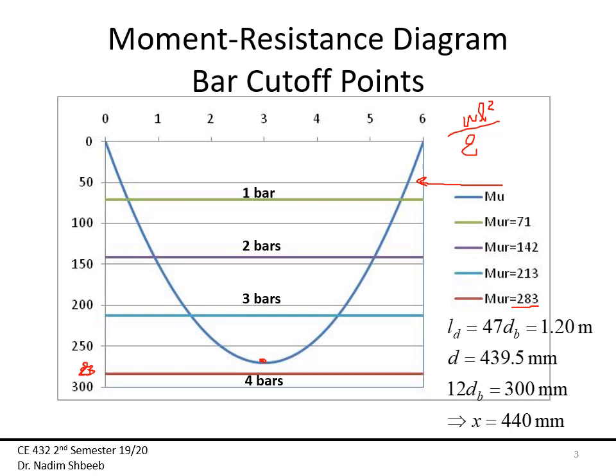One important code provision: at least one-third of bars must run continuously into the supports. With four bars, one-third is 1.3 bars, so two bars must remain uncut into the supports. I'll still show how to handle cut-offs. The points of inflection are where three bars are sufficient — those are the potential cut-off locations.